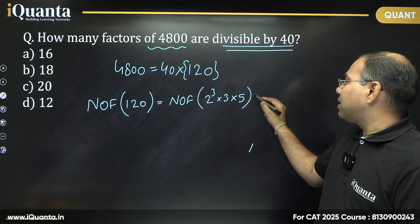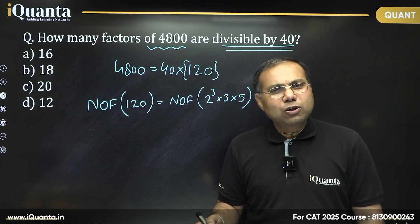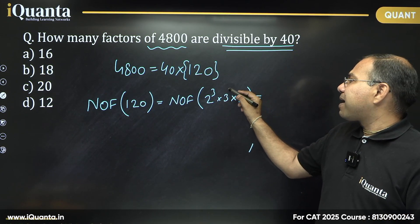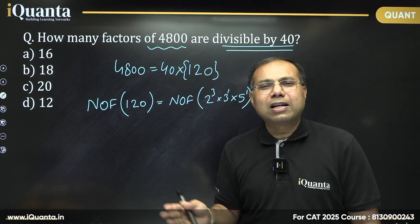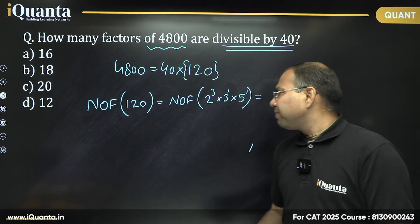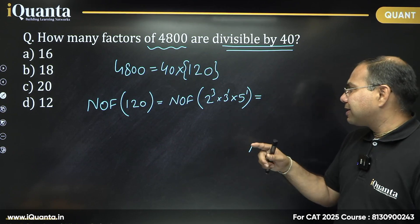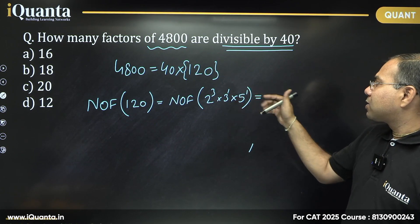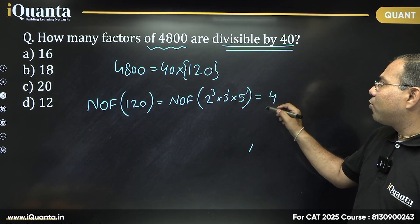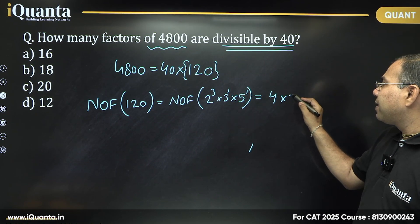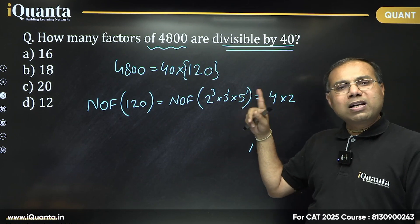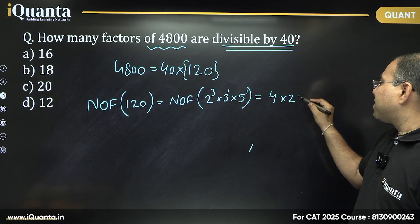So number of factors, this number, how do we find that? We just need to see what is the power of these different prime numbers. It is power 1 here, power 1 here. We just need to increase it by 1 and multiply, right? That is a very basic thing and why it is so, we will discuss that as well. So this is 3 plus 1, just increase it by 1, that becomes 4. This 1, just increase it by 1, it becomes 2 and now multiply and same way this 1 will also be increased by 1, it becomes 2 and further multiply.